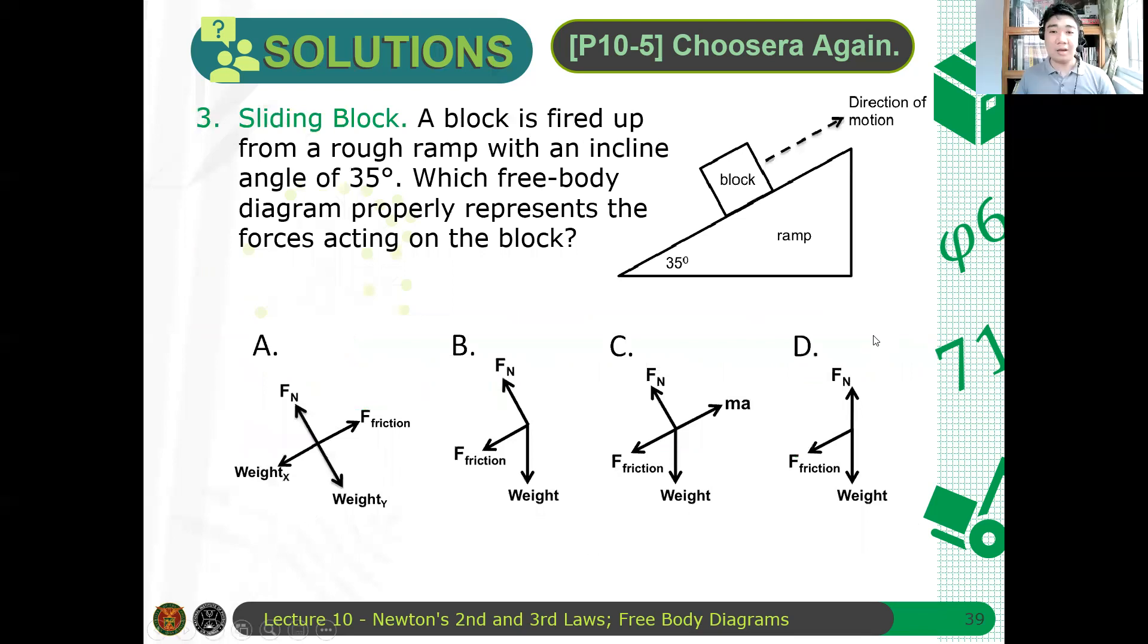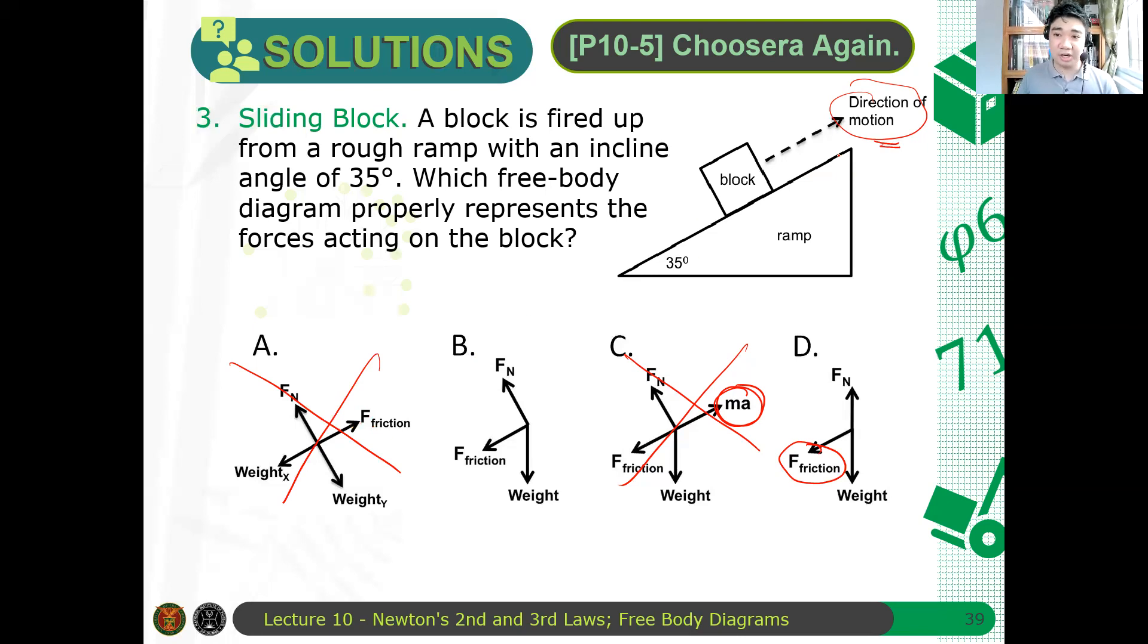And then, finally, we have letter C, a sliding block. A block is fired up from a rough ramp. Which of the following is the correct free body diagram? Okay. The direction of motion or the expected tendency of the object's motion is upward. Therefore, okay. So, ano dito yung obvious na mali? Letter C is obviously wrong. Why? Again, the golden rule here is MA shouldn't be part of the free body diagram. Now, okay. What about letter D? Is letter D correct? Is letter D correct? Okay. Tama naman yung friction, no? Friction is downward. Okay. So, mali na rin yung letter A. Kasi the direction of motion, friction is upward here. But again, friction should oppose the tendency of an object's motion.